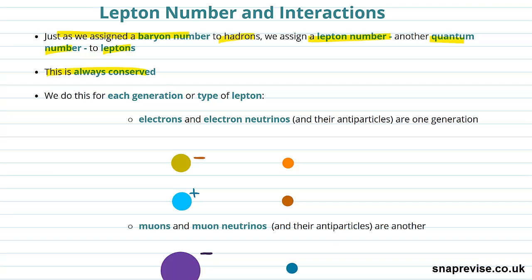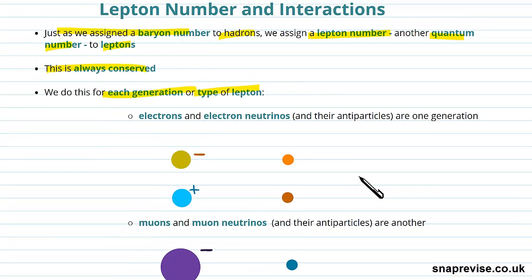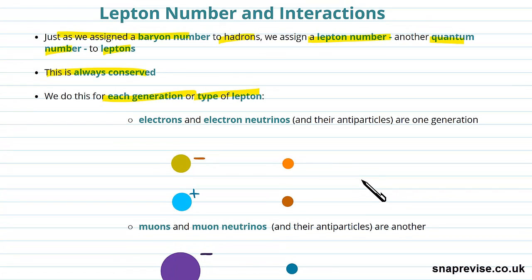So this is lepton number interactions. What we do is assign a lepton number to each generation or type of lepton. We don't just assign a lepton number to every lepton; we assign a lepton number to each generation independently. Electrons and electron neutrinos and their antiparticles are one generation.